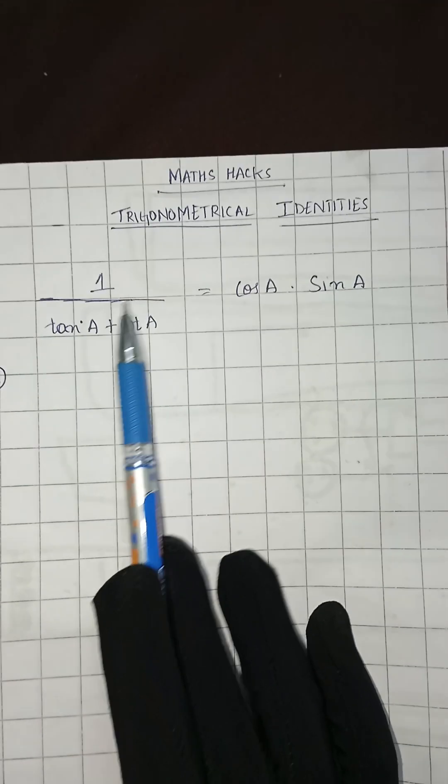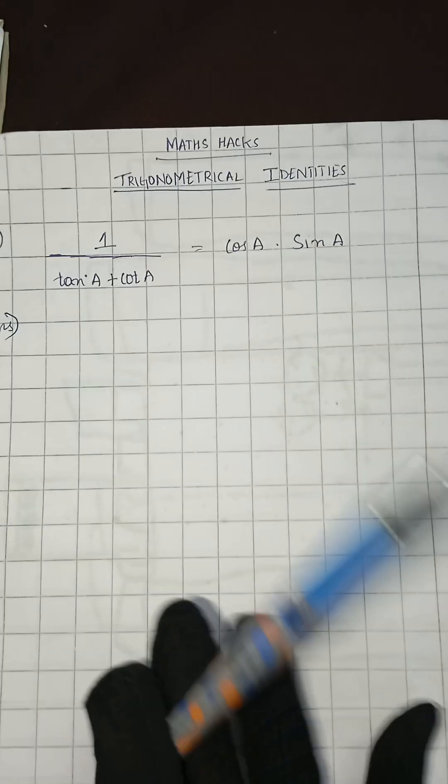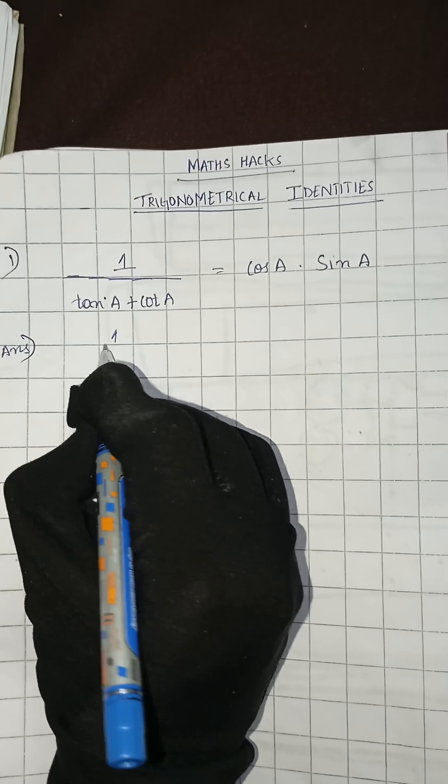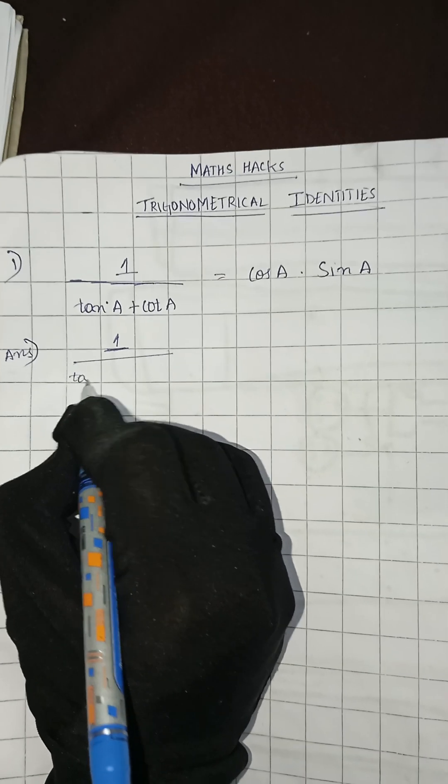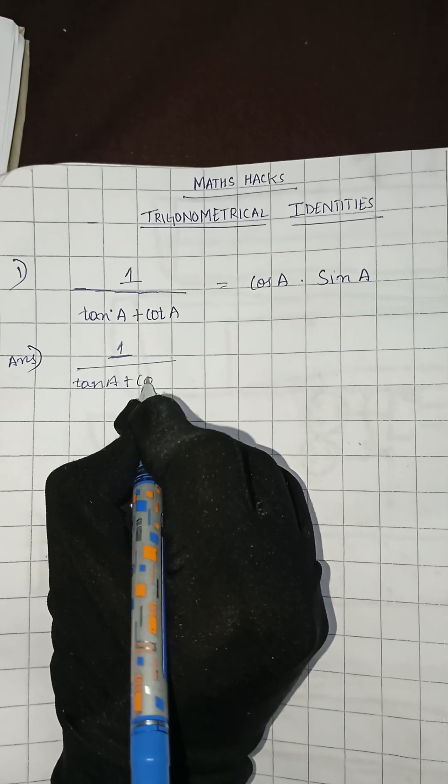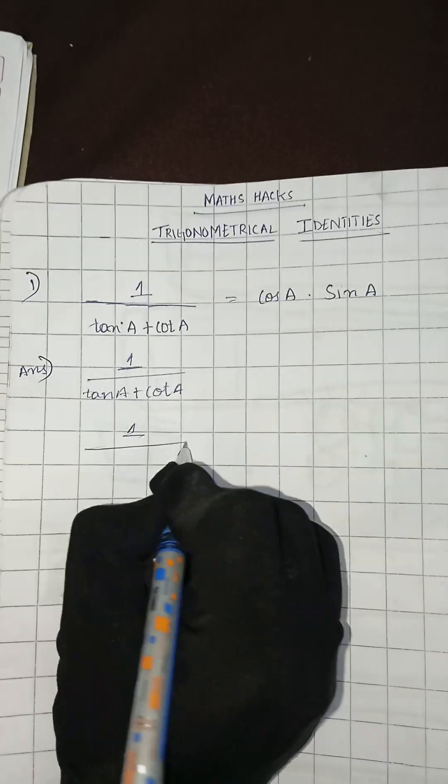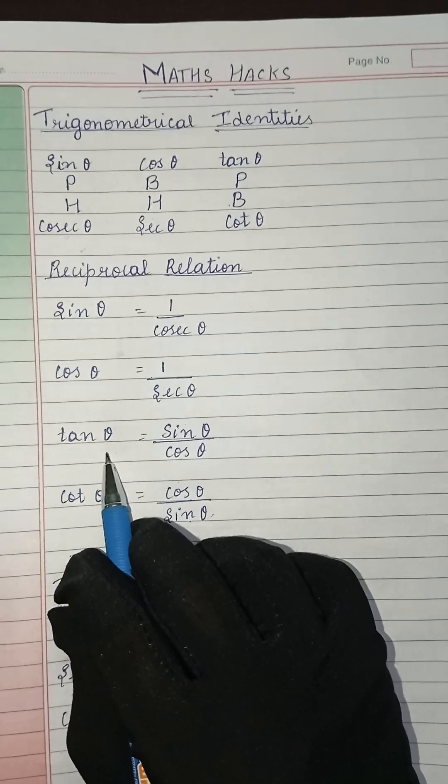Now based on these formulas let's solve the problems. The first question is: 1 divided by (tan A plus cot A) equals cos A times sin A. We have to prove that LHS equals RHS. We'll copy the LHS down first: 1 by (tan A plus cot A).